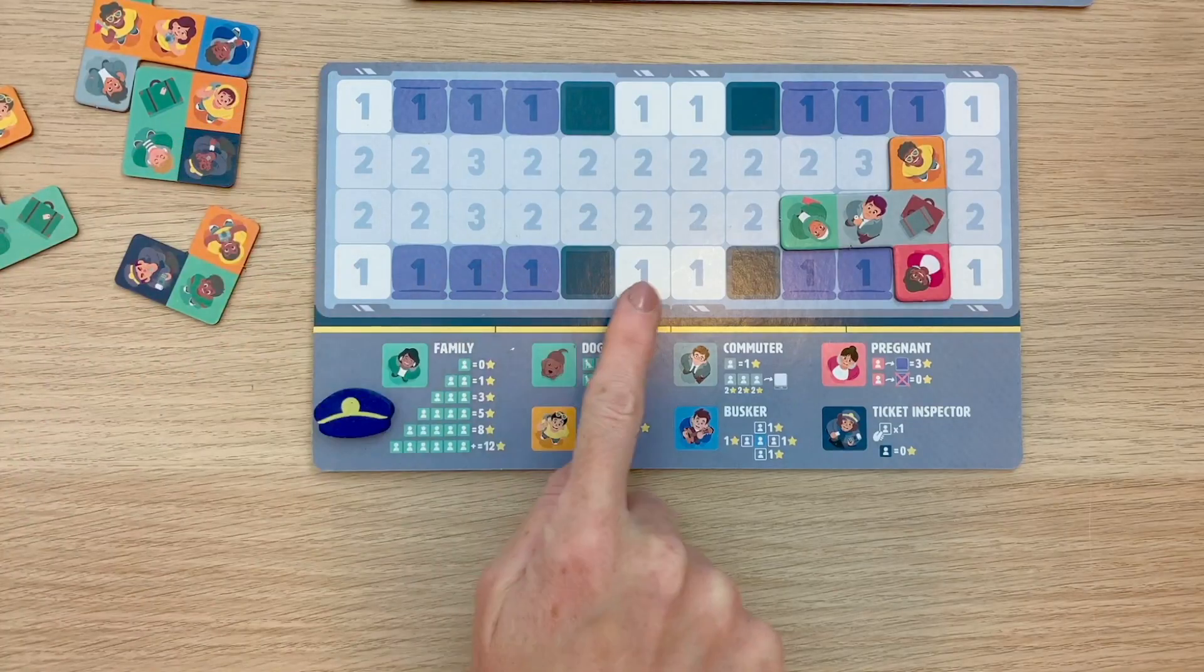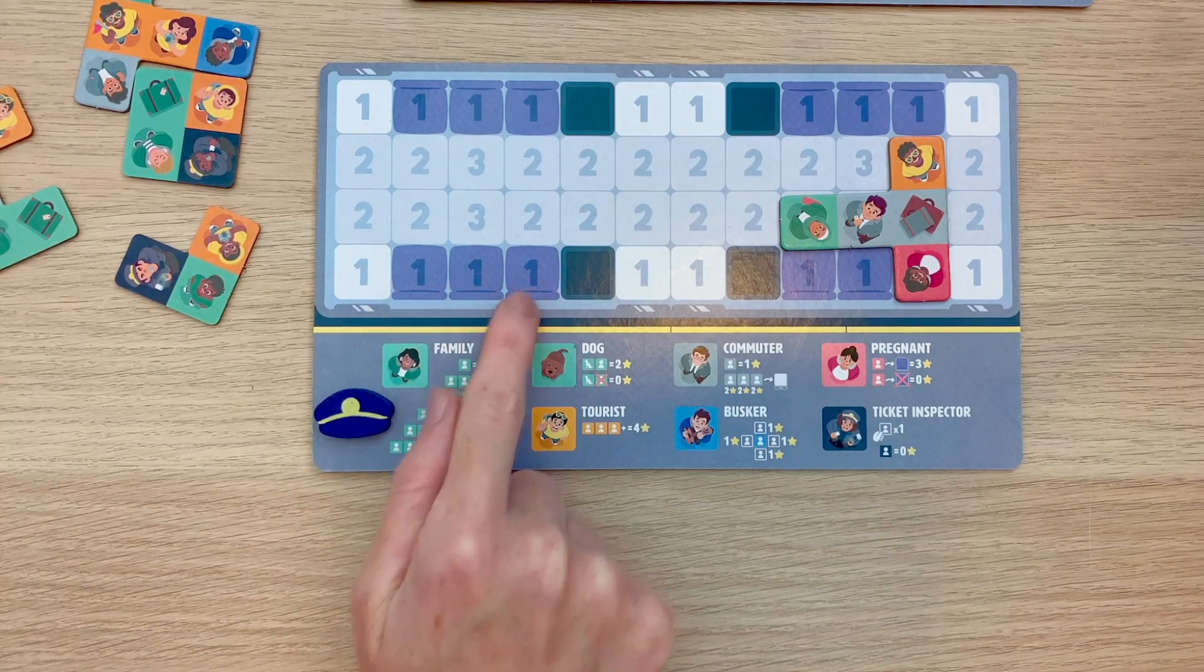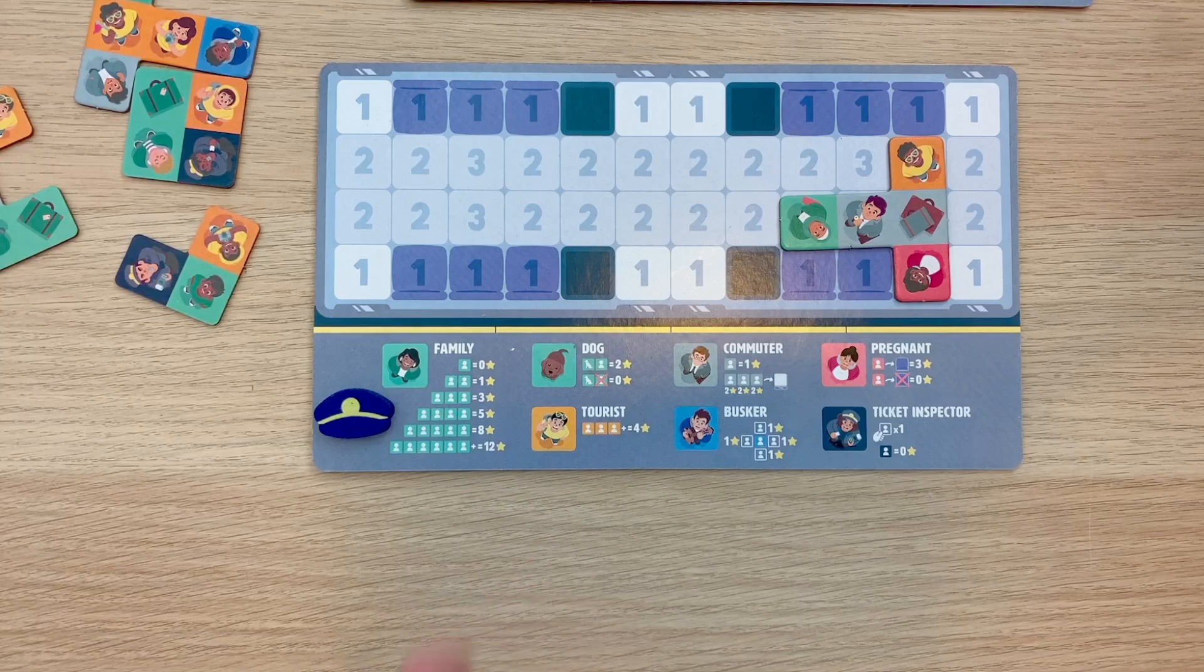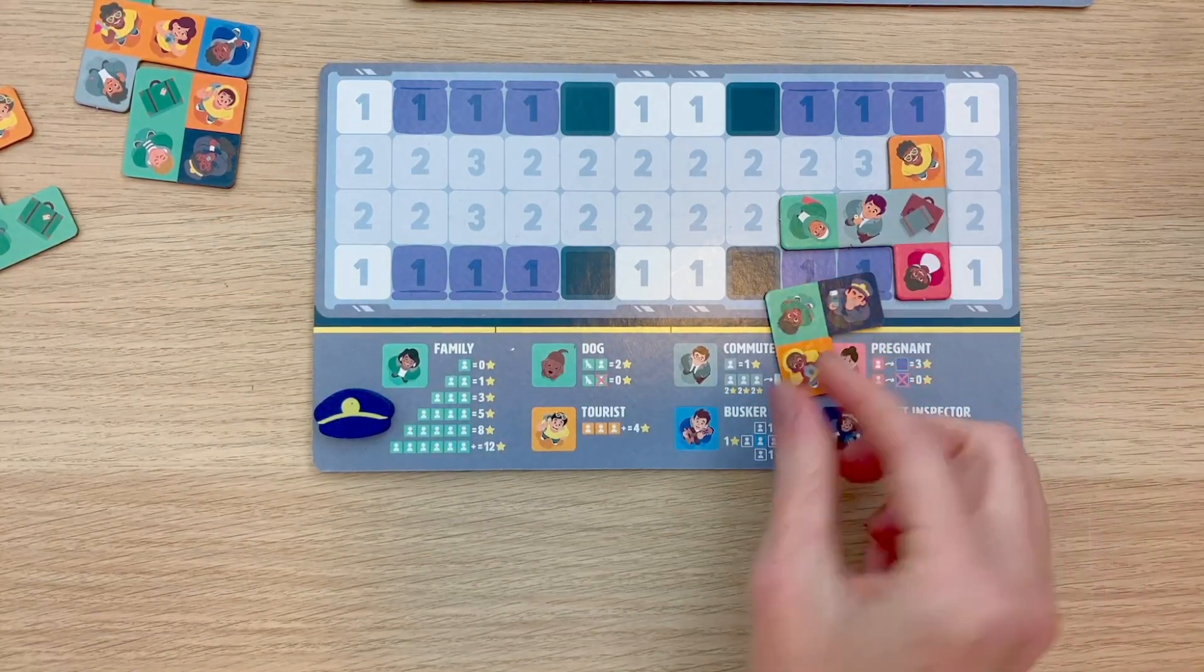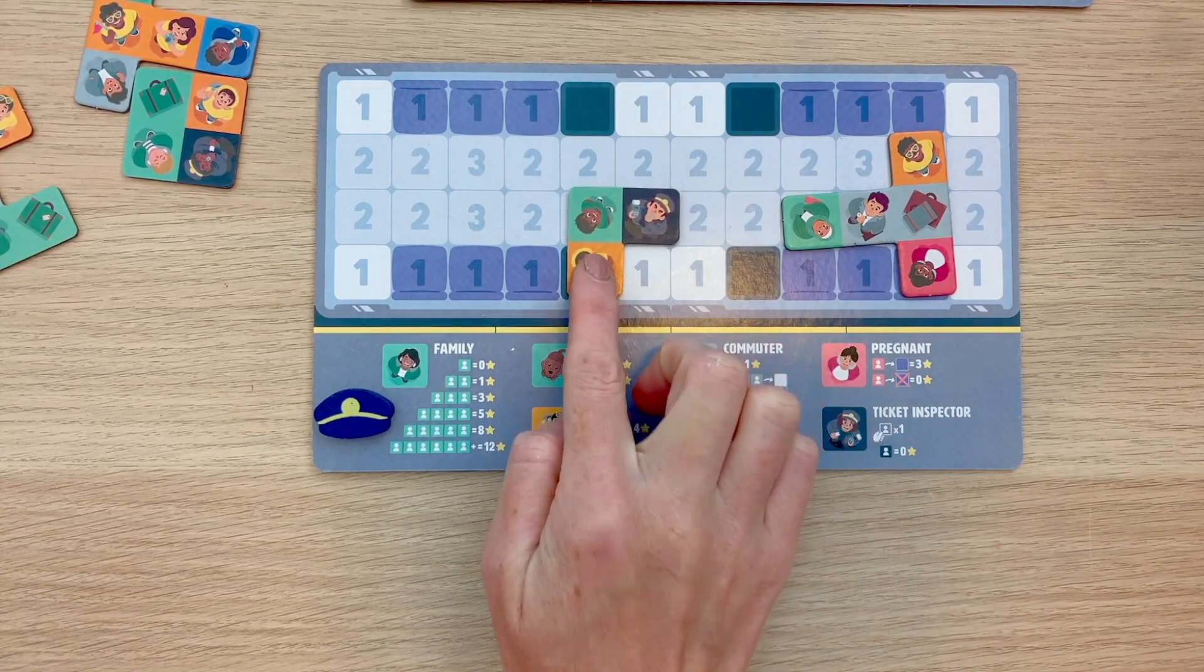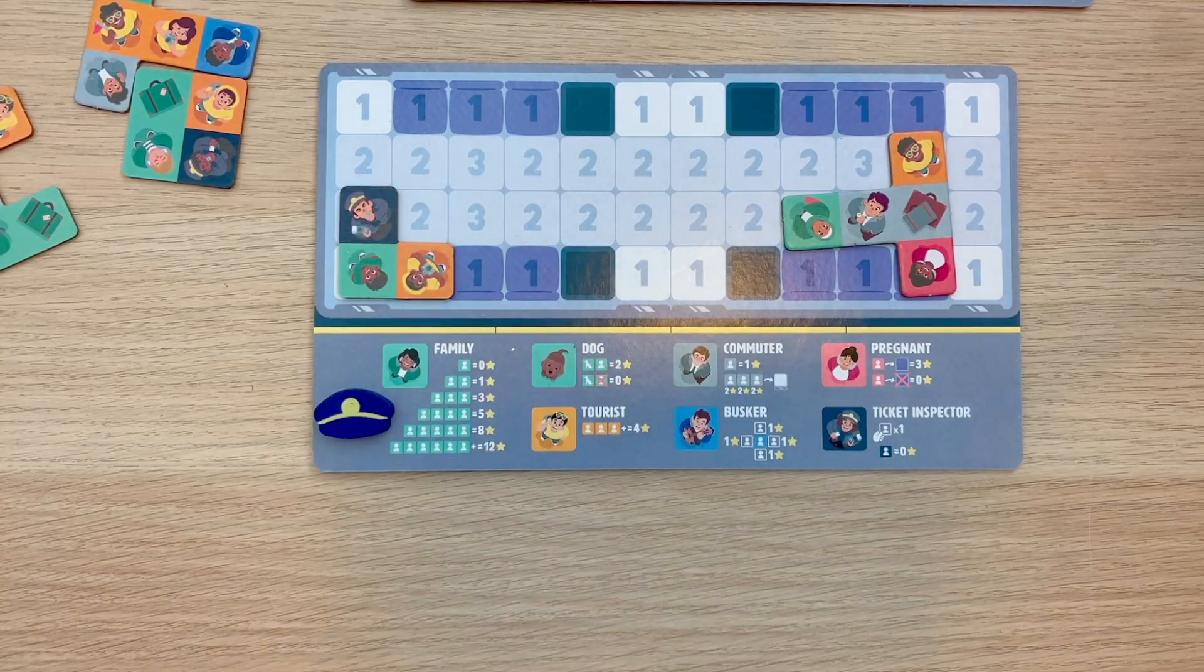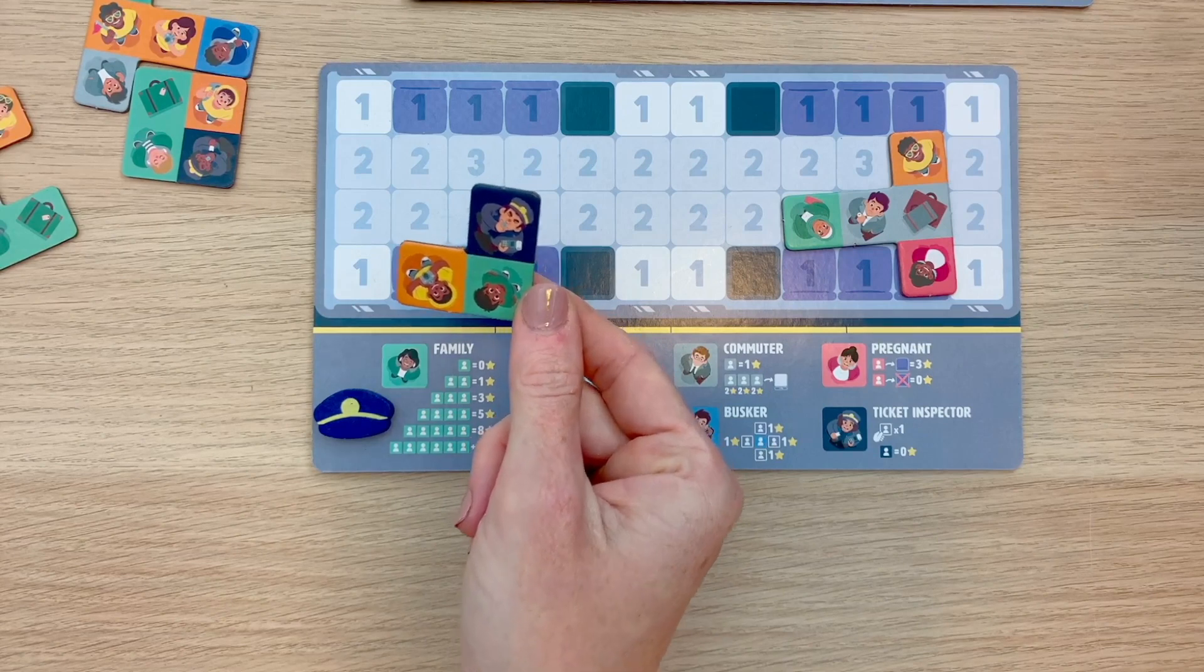These white squares here are door spaces, and these four black spaces are barriers. The purple spaces are seating options. Now, you can use the grid as a guide, and you can place your piece anywhere in your carriage, but you have to obey a few rules. Pieces cannot overlap each other. Also, the whole piece must be in the carriage. And you can't place pieces over those barrier squares. Although, you can place passengers in seating or doorways. You're also able to flip and rotate your piece to any orientation that's going to get you the most points.